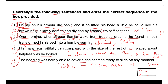Therefore, the sequence is two, one, four, three — which creates a coherent paragraph that follows a logical progression of events and descriptions. The correct answer is two, one, four, three. Hope you understood this. Thank you.